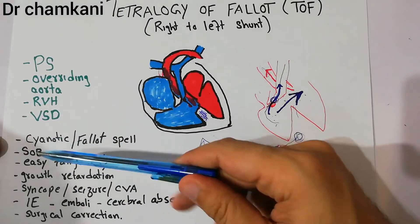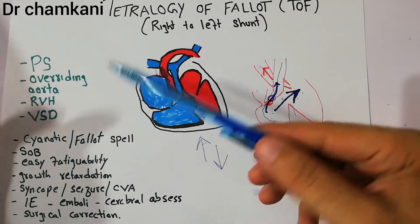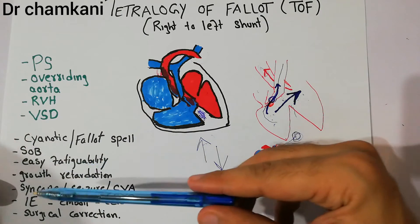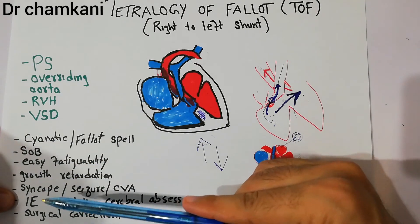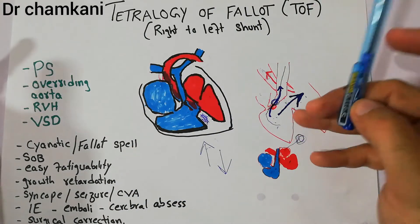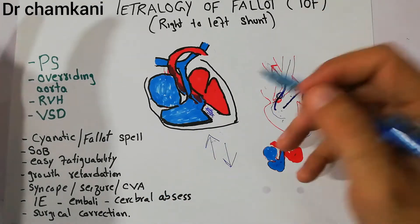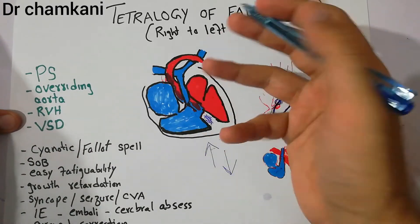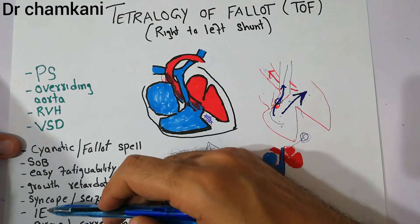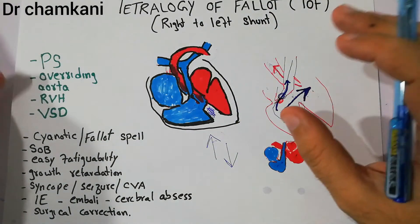These are the complications. The patient will present with cyanosis, Fallot spells, shortness of breath, easy fatigability, growth retardation, syncopes, seizures, and cerebrovascular accidents. They can develop complications like infective endocarditis, embolism causing stroke, clots in brain blood vessels, and cerebral abscess — which may spread from infective endocarditis due to the congenital anomalies and abnormal movement of blood.